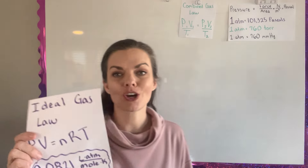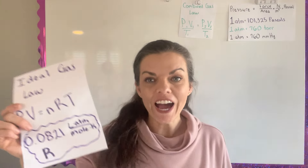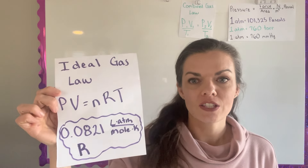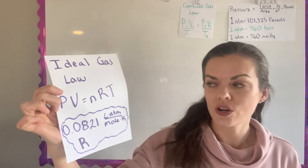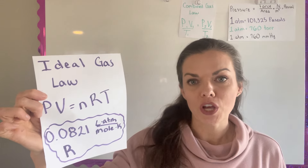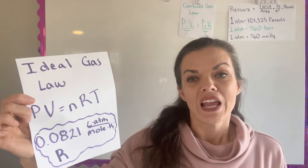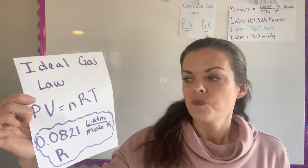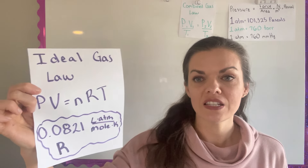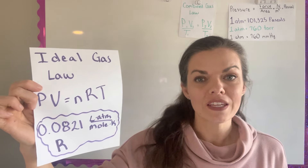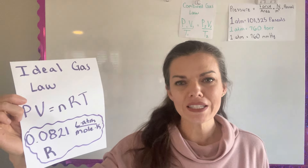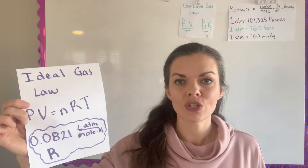The new one for today is called the ideal gas law, and the ideal gas law gives us PV equals NRT. P is pressure, V is volume, N is moles, R is actually a constant that I've written down, and T is temperature. You're going to see this in several equations we're going to use.